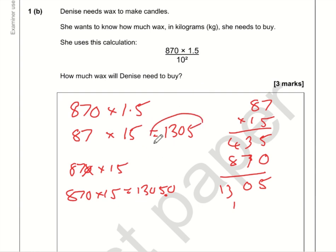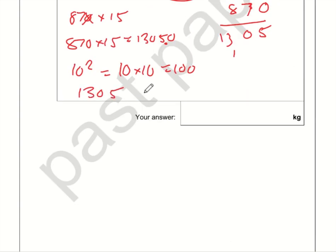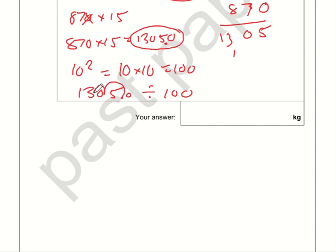Now we're dividing this number by 10 squared. 10 squared means 10 times by 10, which is 100. So our final calculation is 1305 divided by 100. When you're dividing by 100 you move the decimal point two positions to the left because we're making it smaller. So that is 13.05 kilos.